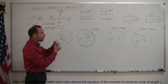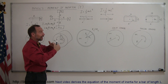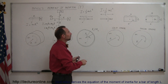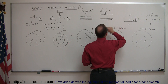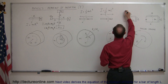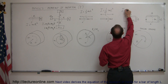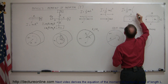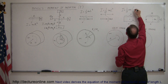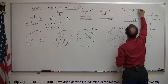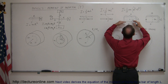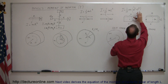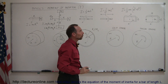What if the bar is not a thin bar but a wide plank rotating about its center? Then the equation becomes I equals one-twelfth the mass times A squared plus B squared: I = (1/12)M(A² + B²). The mass is distributed away from the point of rotation in both directions, which is why both dimensions appear.